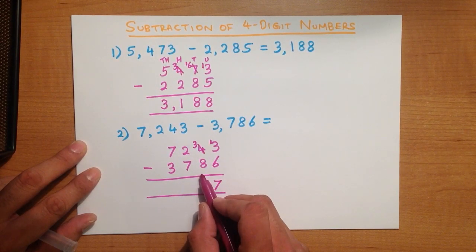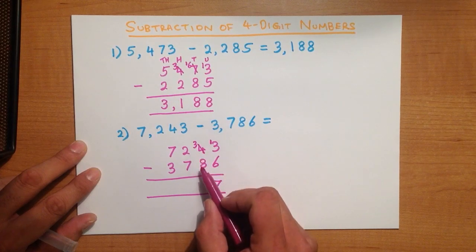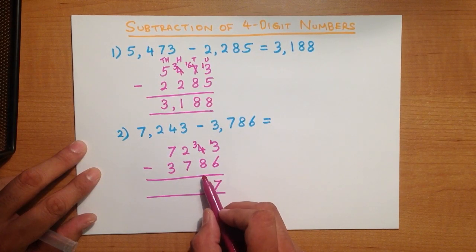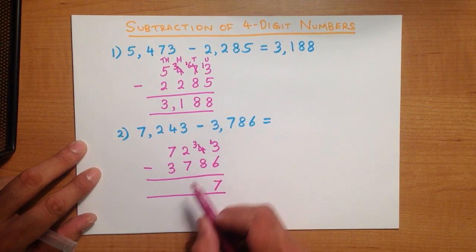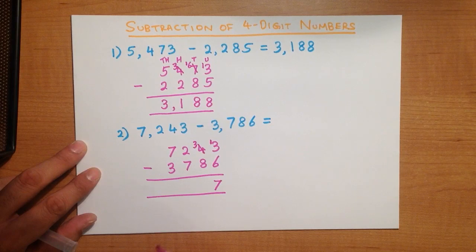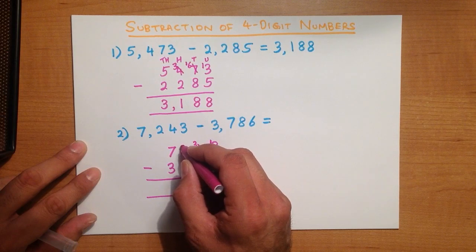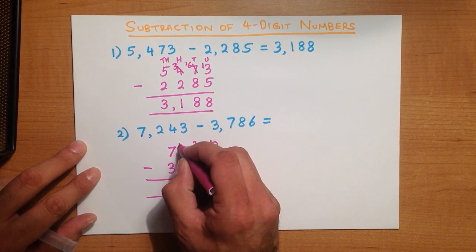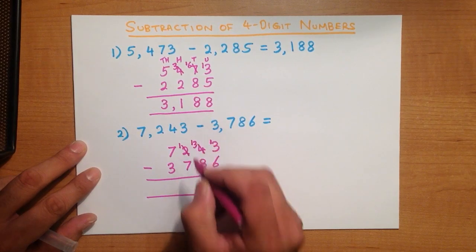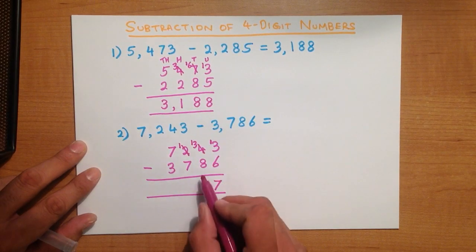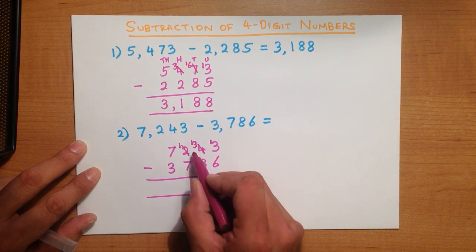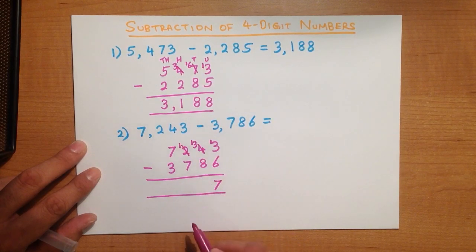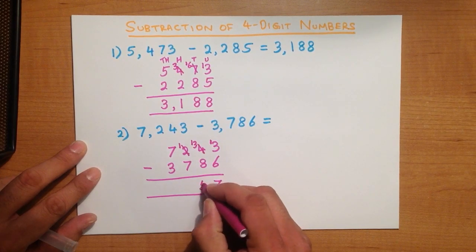Now we do the tens column: 3 minus 8. Can we do that? We can't, because 3 is smaller than 8. So we take 1 from the column to the left — in this case a 2. We cross out the 2, and 2 minus 1 is 1, and we place that 1 over here. This column now becomes 13 minus 8, which is 5.